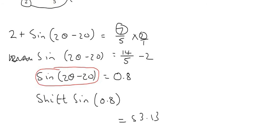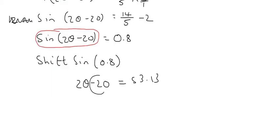So it'll be 2 theta minus 20. So now you've got to get theta alone. And so we're going to take this 20 over to the other side. And so we're going to end up with 2 theta equals to 73.13. And then you're going to have to divide by 2 to get theta completely by itself. And so you're going to end up with a final answer of 36.57 degrees.